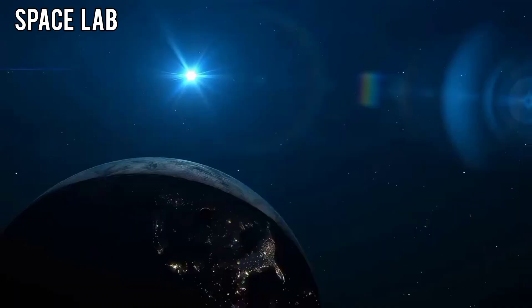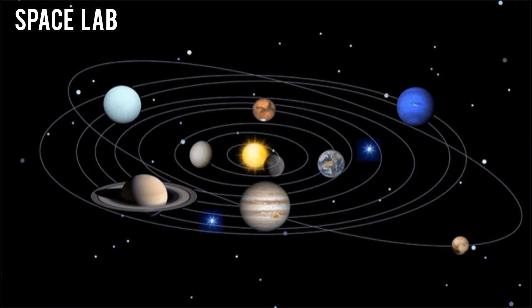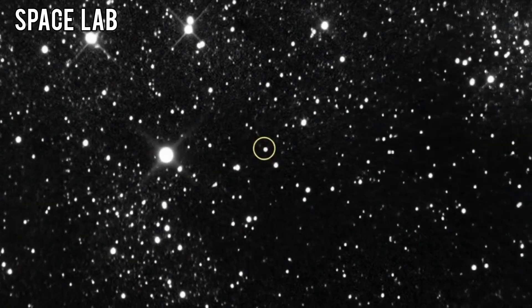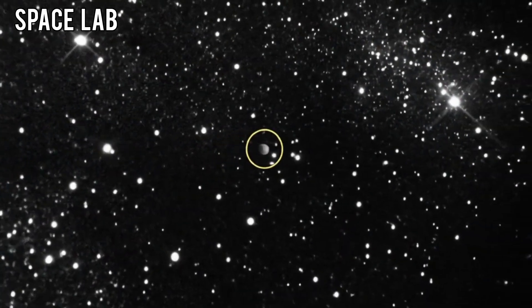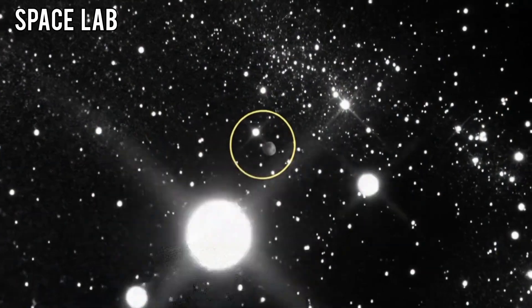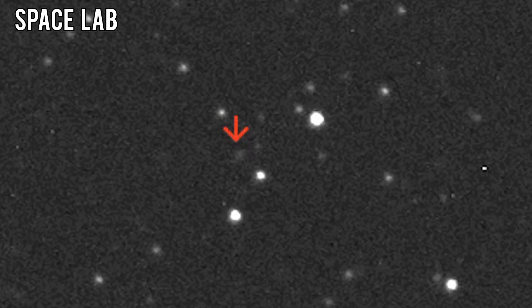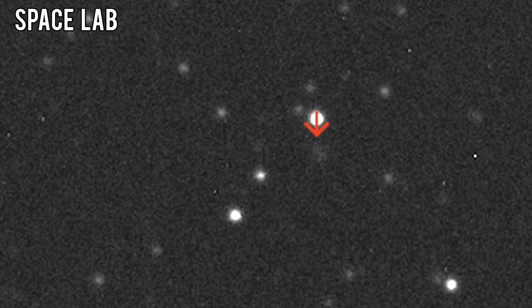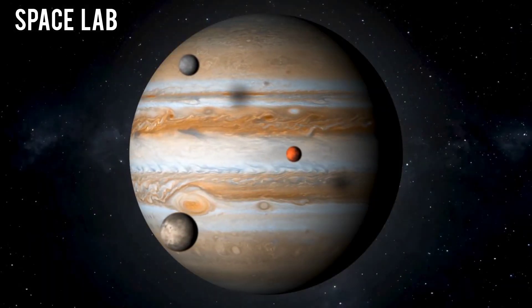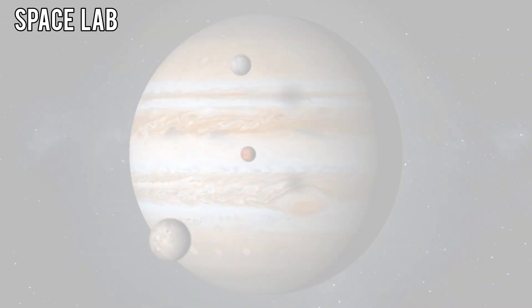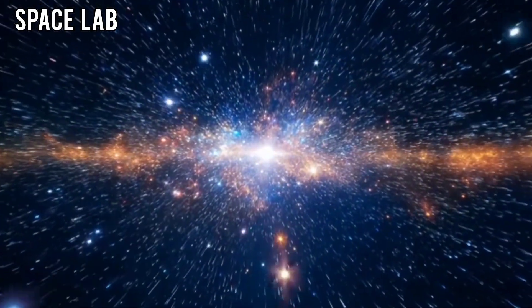A colossal object had just entered the solar system. And when scientists ran the numbers, they were stunned. This thing wasn't just large, it was 100 times bigger than 31-Atlas itself. To put that into perspective, if 31-Atlas is the size of a mountain, this new arrival is the size of a small planet. It dwarfs anything else on a collision course in recorded history.